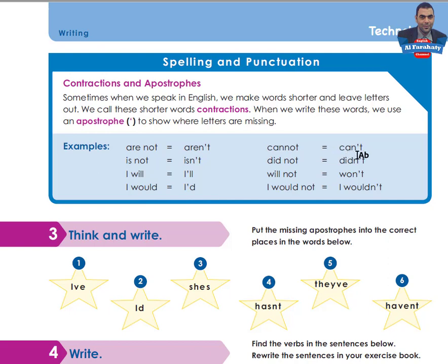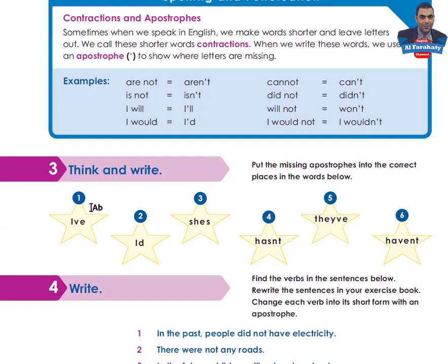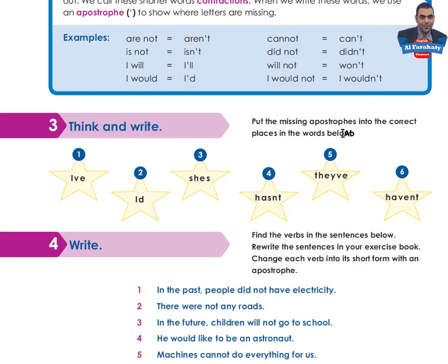Another example is 'cannot' → 'can't', using an apostrophe. Let's look at Activity 3: Think and Write — put the missing apostrophes into the correct places in the words below. You are asked to write the missing apostrophes. Take your time to do this, then come back in order to check your answers.